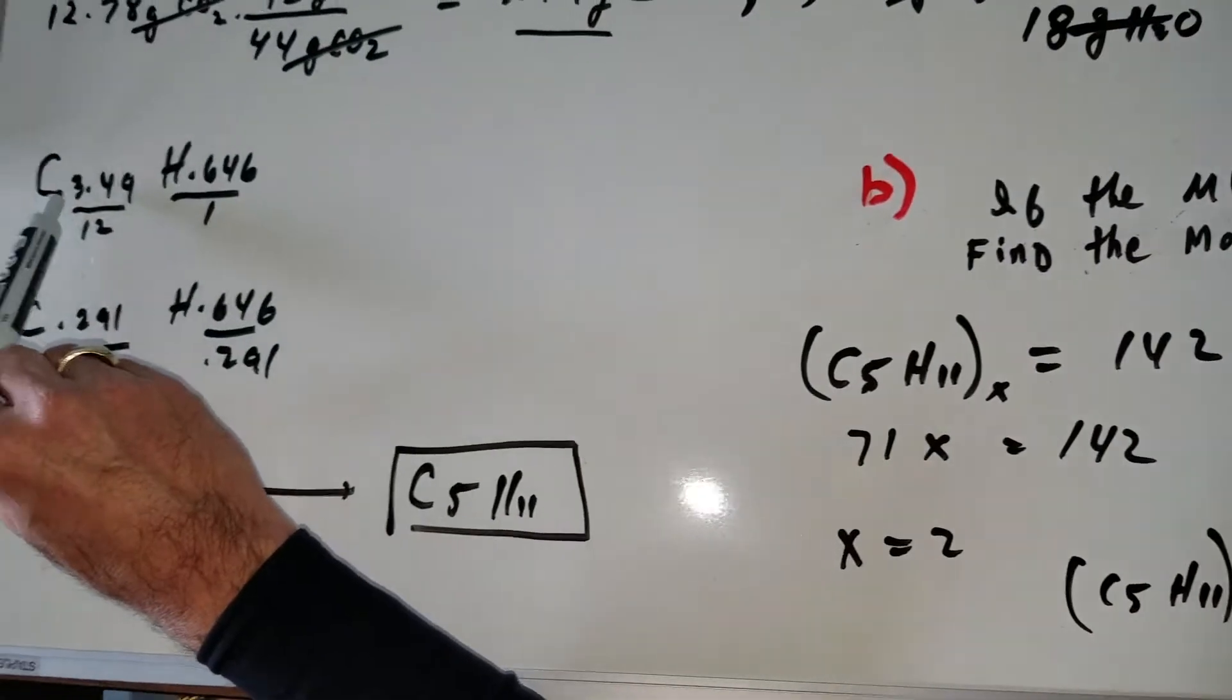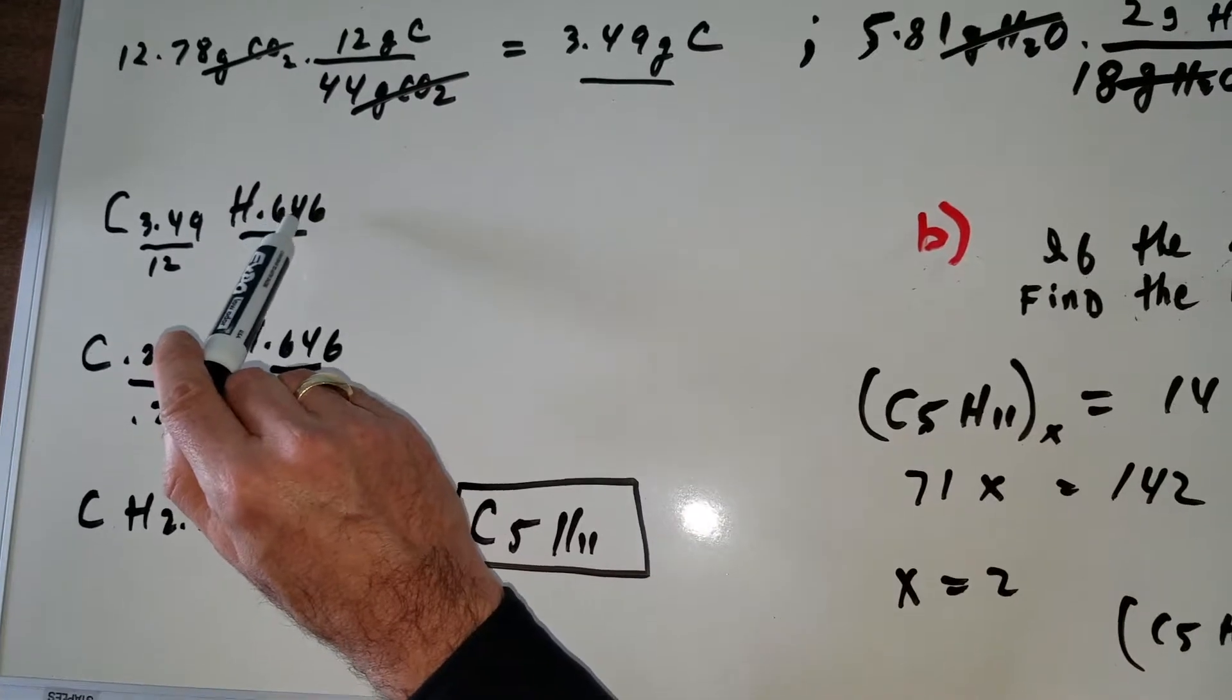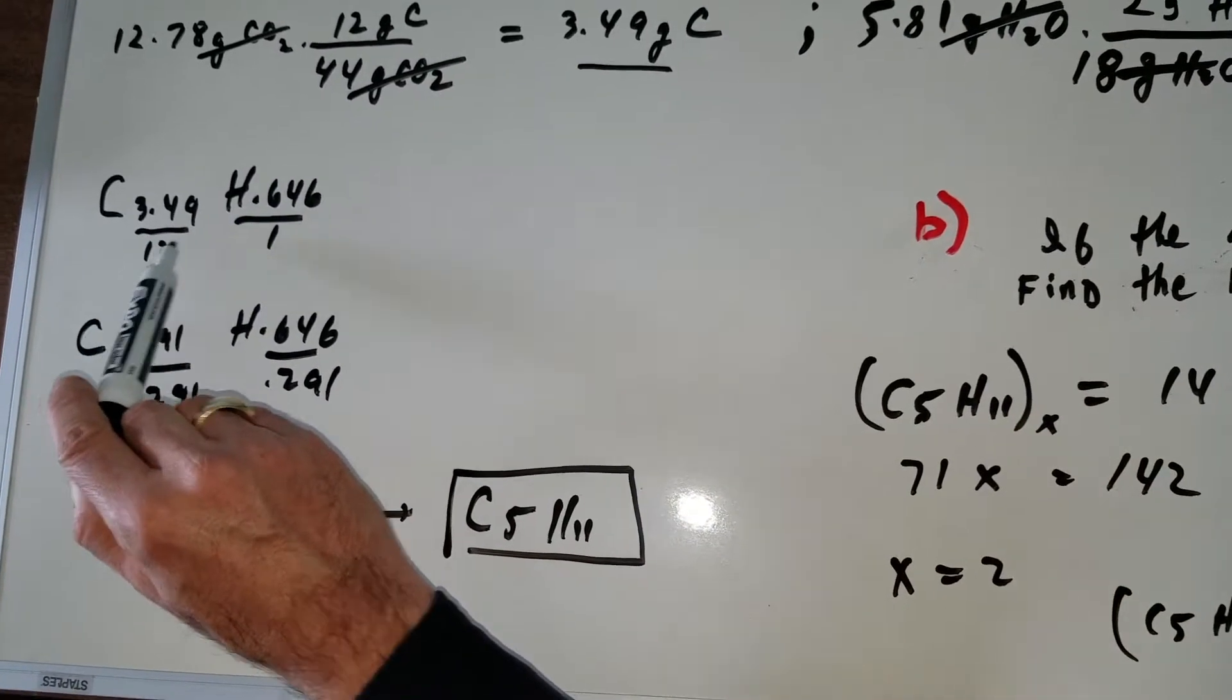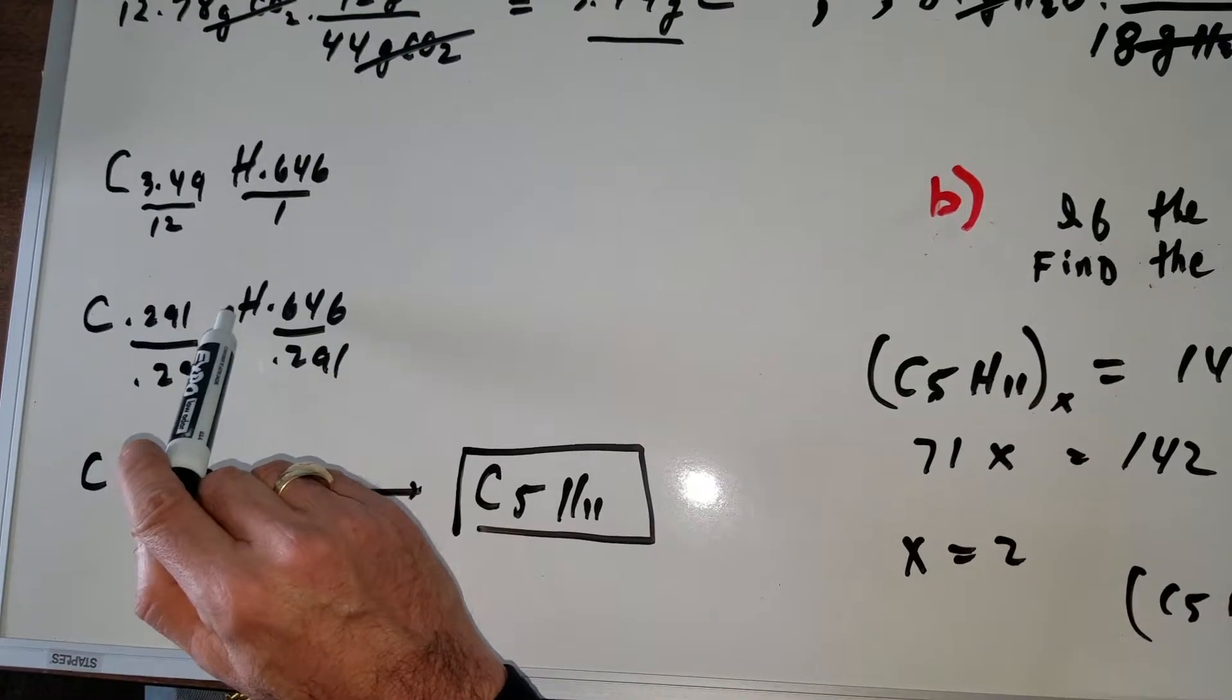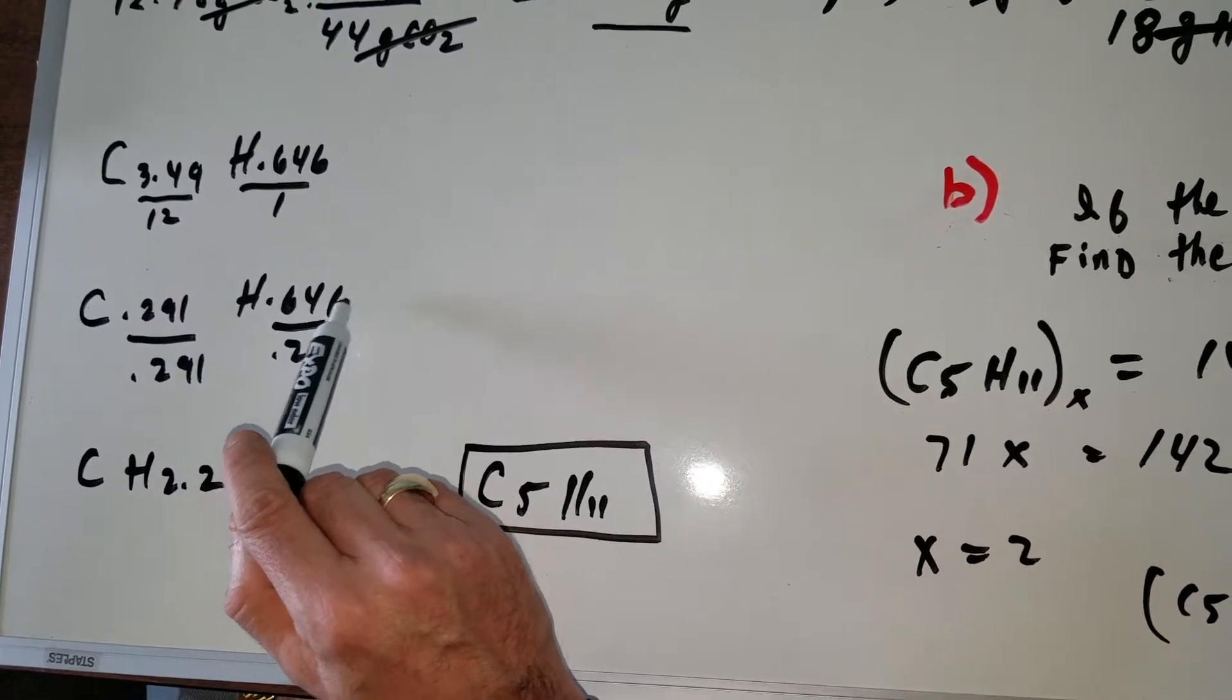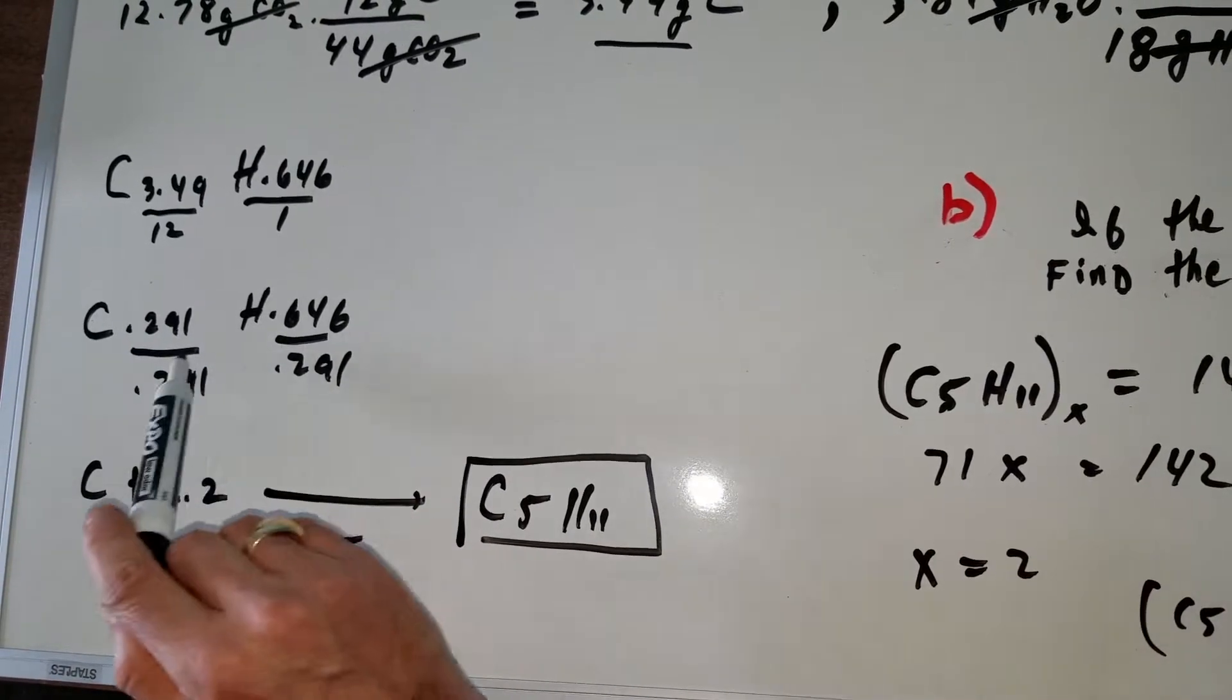Carbon is 3.49, hydrogen is 0.646. Divide by the weight of each one to get it into moles. So this gives me carbon 0.291 and hydrogen 0.646. Divide by the smallest number to get a nice ratio.